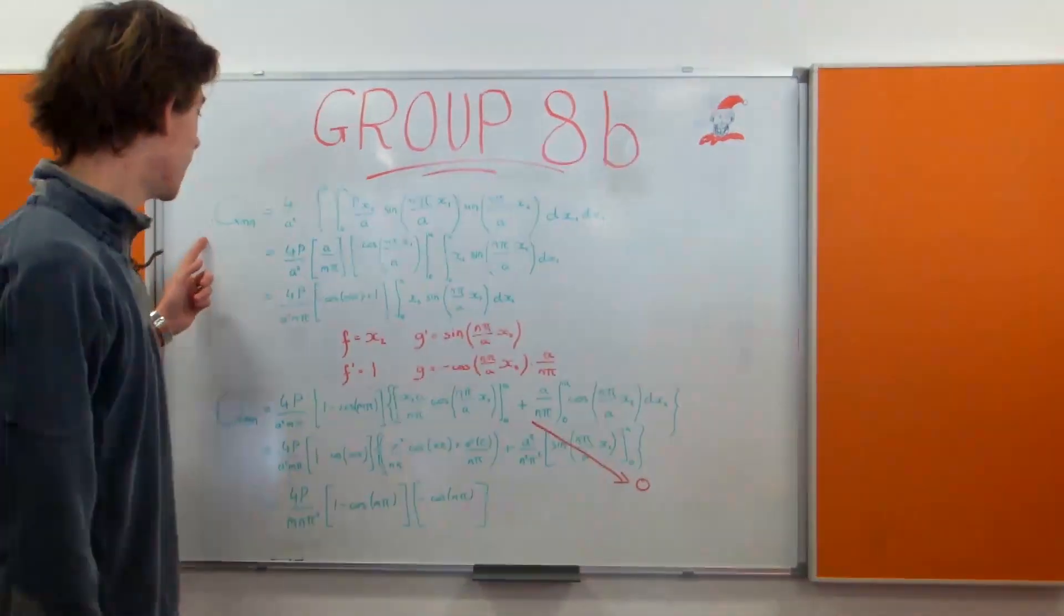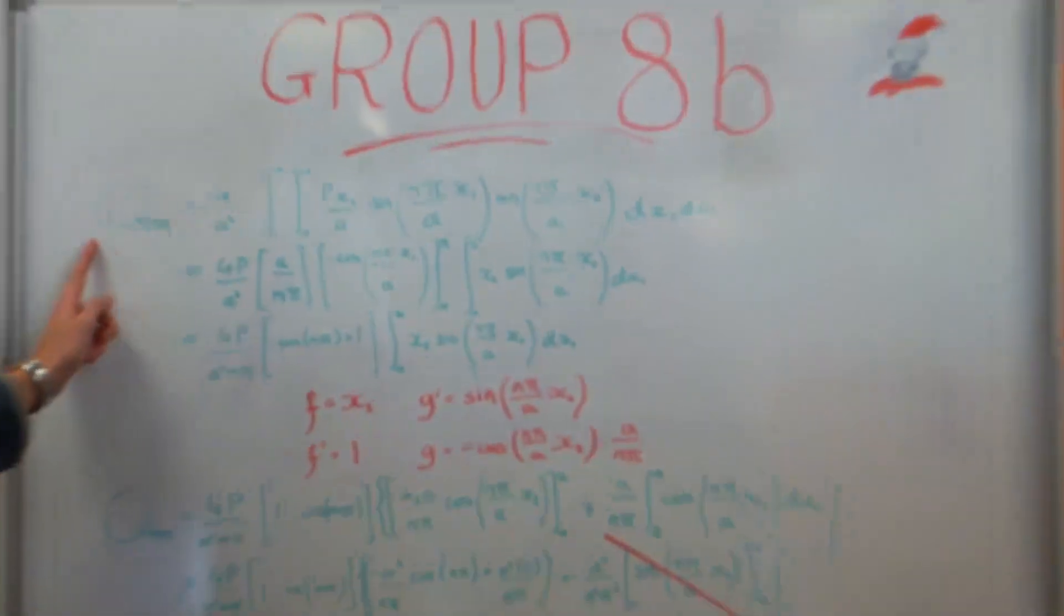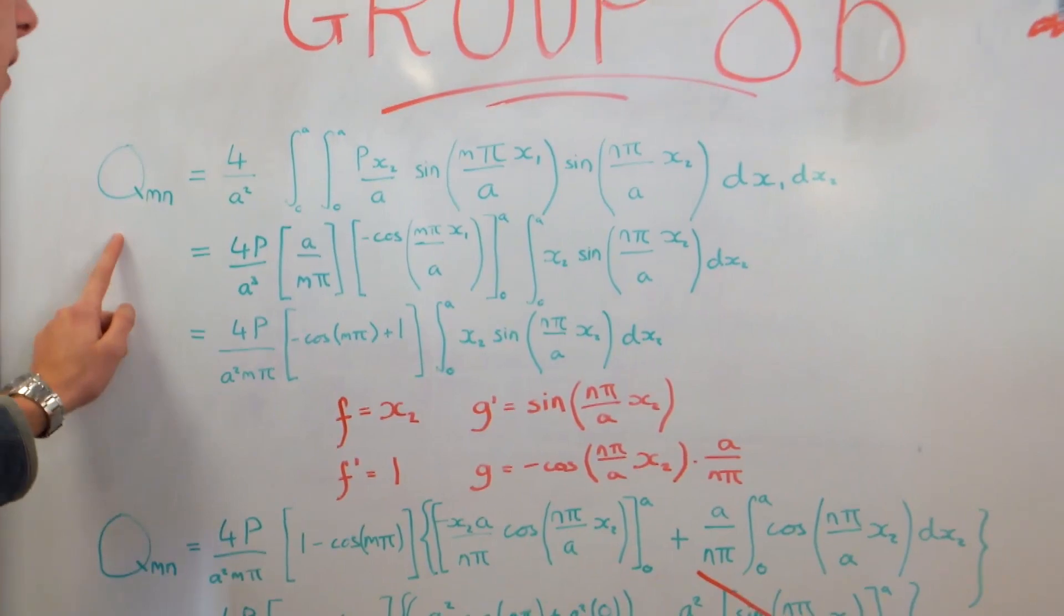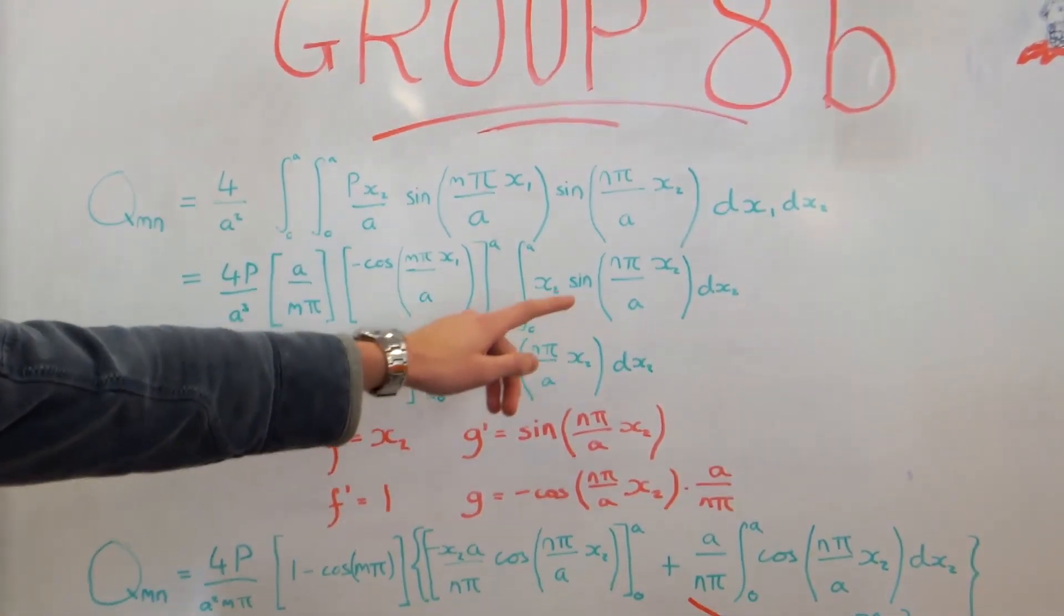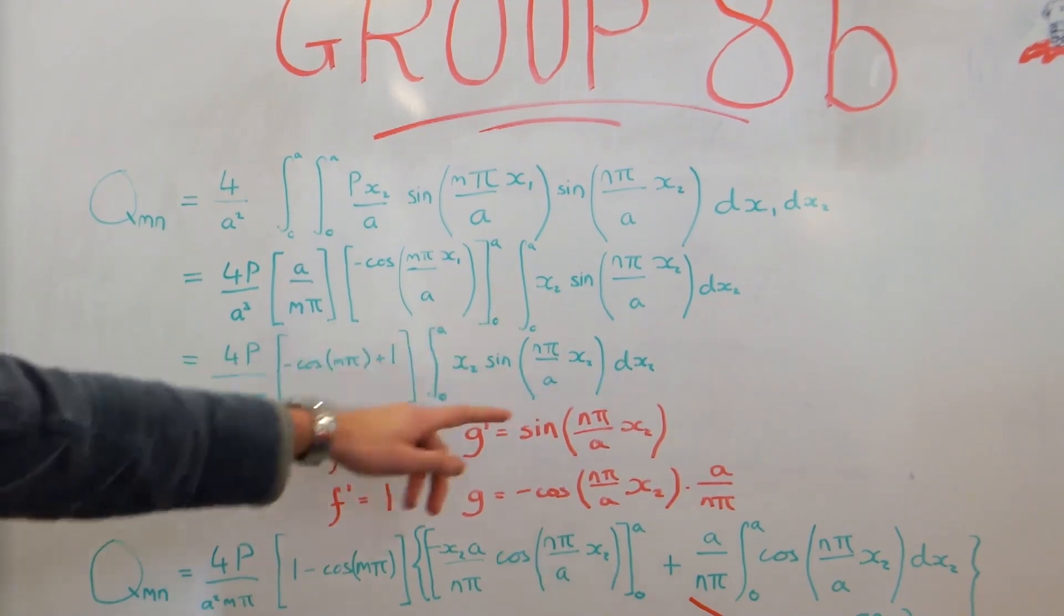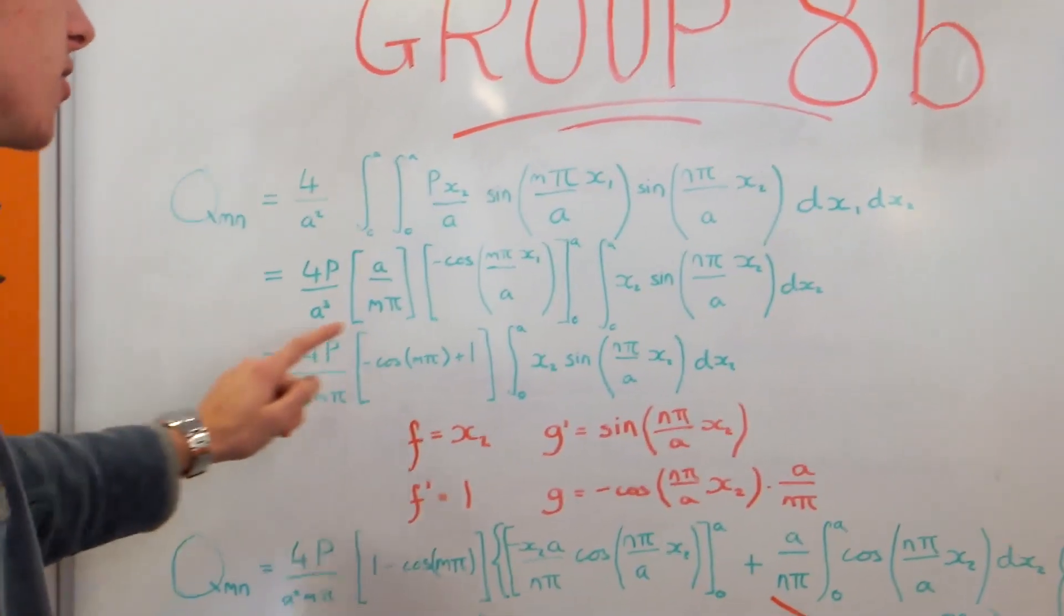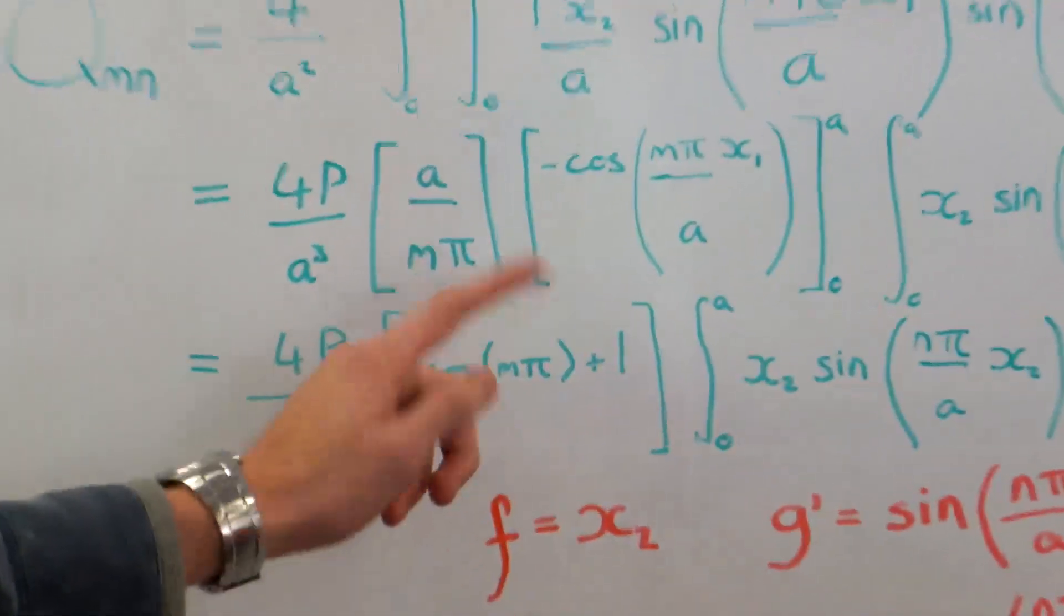Right, so now we want to find the coefficient of the double Fourier series which we've called Qmn. And this is expressed as a double integral of this. And so we start off by taking out the constants and we integrate with respect to x1 first.